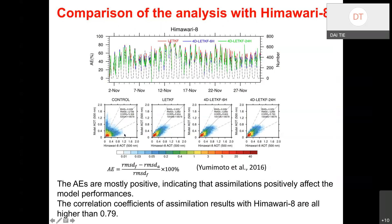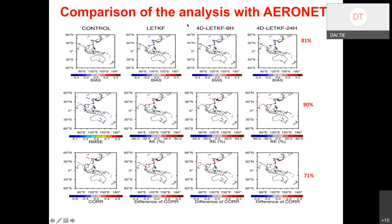This scatter plot shows the model AOT versus Himawari-8 observed AOT. The assimilation experiments show AOT values close to the one-to-one line. Using independent observations to validate the analysis over the simulated domain, we find that about 80% of AOT values are improved by the assimilation.